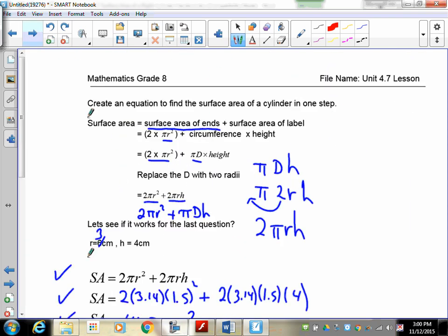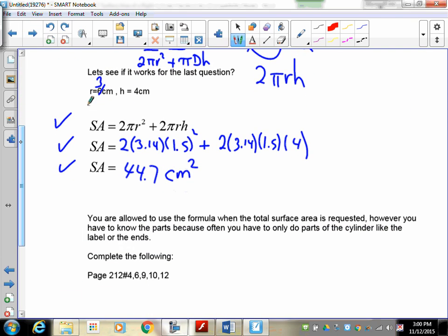But, let's not be silly, if we can use a formula to speed ourselves up, let's use it. So, if you read right here, it says you're allowed to use the formula when the total surface area is requested. However, you have to know the parts, because often you only do parts of the cylinder, like the label or the ends. So, I need you to complete the following assignment. If you have any questions, please come and see me, or watch the video over and over until you get it. And we will see you in the next lesson.